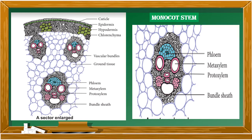Next, we are going to learn about the anatomy of a monocot stem. Looking at the picture, the very prominent difference is the vascular bundle and the arrangement of the bundles on a tissue called ground tissue. The outermost layer of the monocot stem is the epidermis, made up of a single layer of parenchyma cells covered with a thick cuticle. Stomata are either absent or very less in number.